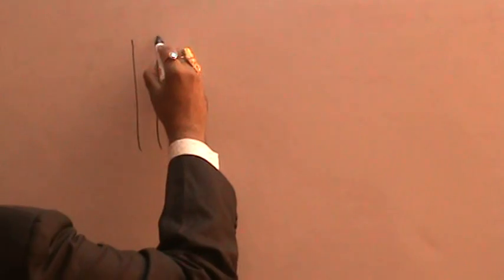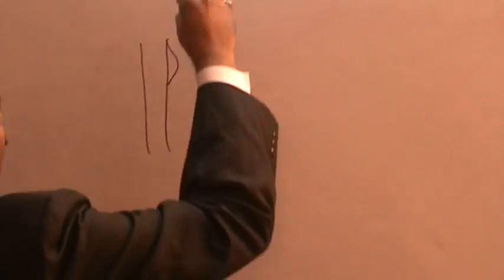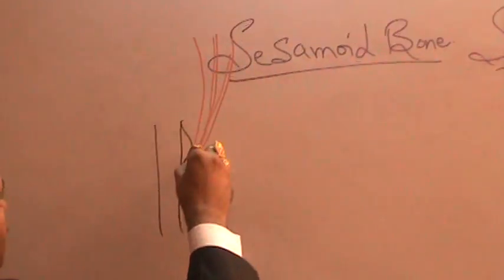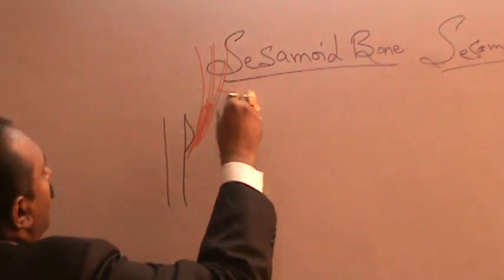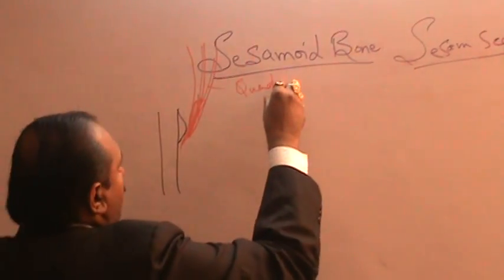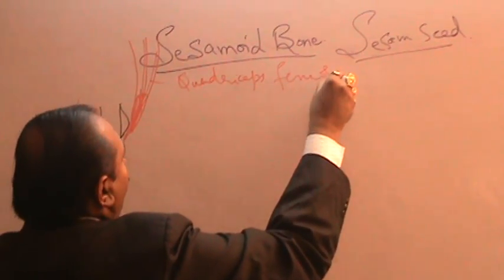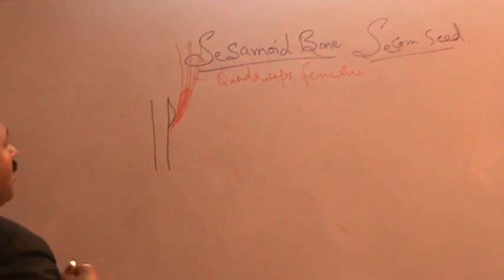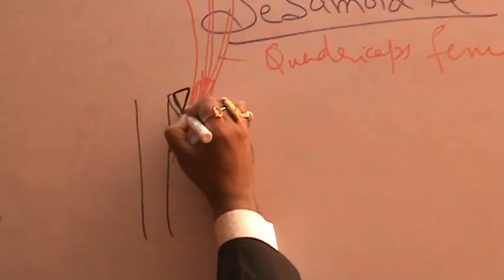Now if you take this — this is the tibia and here you have got the tibial tuberosity. At the tibial tuberosity you have got the insertion of the muscle quadriceps femoris. This is the tendon of quadriceps femoris, and within that tendon you have got a small bone which is called the patella.